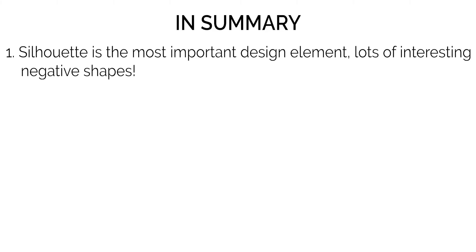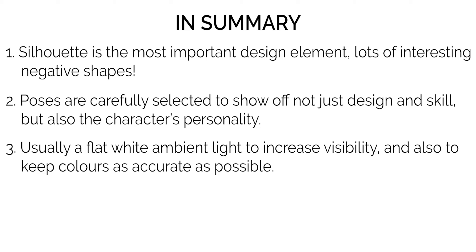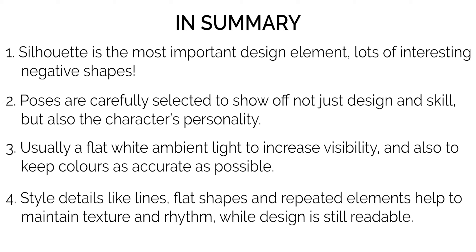So to sum up part one, here are four key characteristics to Jack Burke's art. Number one: the silhouette is everything — good shape language and use of negative space makes each character instantly readable and therefore memorable. Two: Jack carefully chooses the pose of each character not just to make them appear dynamic and alive, but also to show off their skill set and, more importantly, their personality. Number three: the lighting is generally just a flat ambient white light, which allows for good visibility of all key design aspects and also makes sure that everything is true to colour. And number four: stylistic choices like varied line weights, flat colours and low contrast but hard edge plane shifts, and repetition of shapes and colours, allow for very dynamic, beautiful concepts with a lot of rhythm and life.